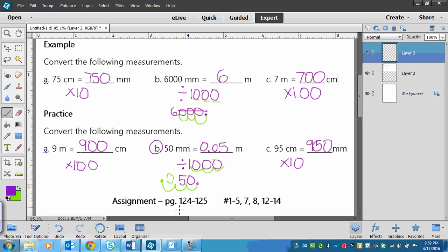Your assignment is on page 124 to 125. And yes, you will be doing things like this. Your numbers are 1 to 5, 7, 8, 12 to 14. Seems like it's long, but most of them are pretty quick.